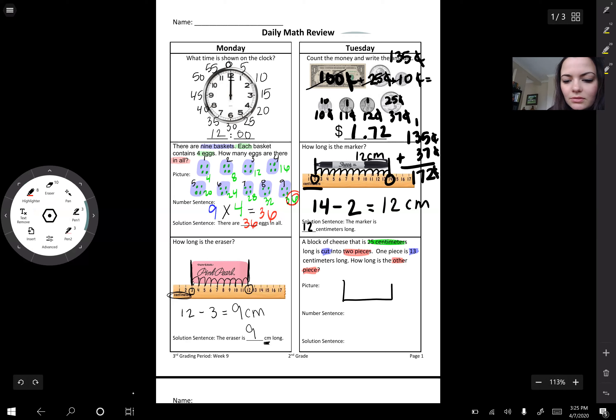Let's go ahead and draw our block of cheese. So I've got a block of cheese. And that whole block of cheese is 25 centimeters long. I'm going to go ahead and cut it into two pieces. And I have a piece that's 13. I know that one of my pieces is 13. And remember, this is a part. What are we missing? It looks like we're missing a part. So I need to write my number sentence.